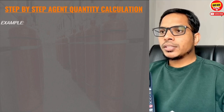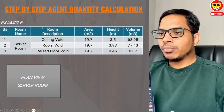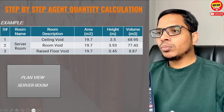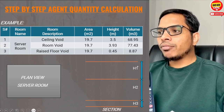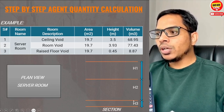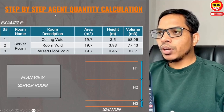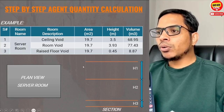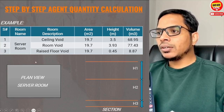Let us start with an example of a server room. I have shown a plan view and mentioned the room dimensions — area and height. When we multiply area by height, we get the room volume. In our particular room, we have a ceiling void H1, a room void H2, and a raised floor void H3. Whenever we calculate FM 200 agent quantity, we need to consider the complete room volume, including all three voids.